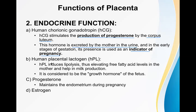Human placental lactogen (HPL) induces lipolysis, which elevates free fatty acid levels in the mother and helps in milk production after delivery. HPL acts almost like a growth hormone, since growth hormone has a lipolytic function. HPL is also considered to be the growth hormone of the fetus — it has a role in fetal growth. The third hormone, progesterone, maintains the endometrium during pregnancy.